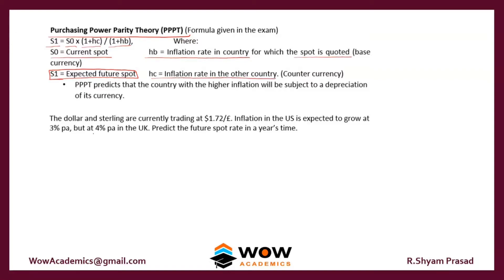Let's work out this problem: Dollar and Sterling are currently trading at $1.72 to a pound. Inflation in the US is expected to grow at 3%, but at 4% in the UK. We need to predict the future spot rate in one year's time.